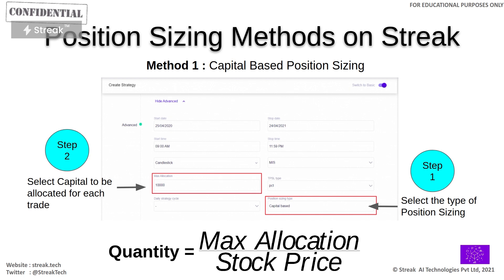The first method is capital-based position sizing, which is the simplest method. For example, I want to allocate 10,000 rupees to trade a stock. The quantity selected will depend on the stock price. On the platform, you select position sizing type as capital-based, then specify how much capital to allocate — for example 10,000 rupees, 1,000 rupees, or 500 rupees. The quantity is calculated as: maximum allocation divided by the stock price. I will also show you this practically on the Streak platform.